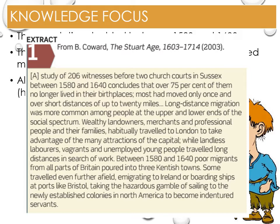Coward continues: long-distance migration was more common among people at the upper and lower ends of the social spectrum. Wealthy landowners, merchants and professional people and their families habitually travelled to London to take advantage of the many attractions of the capital. A consumer society — second homes were becoming the norm for the more wealthy. Meanwhile, landless labourers, vagrants and unemployed young people travelled long distances in search of work. Therefore, there was a shortage of work, seasonal and longer term, meaning the poor moved around.